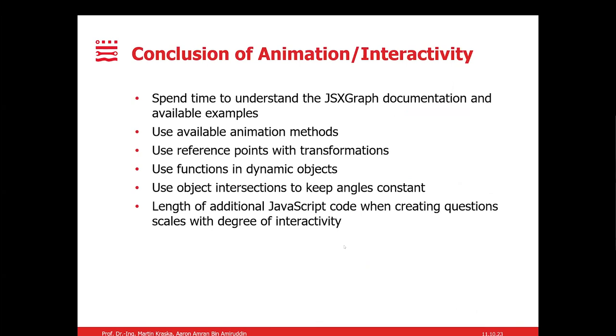And now moving on to the conclusion of the lessons that I've learned from trying to animate and make the objects interactive in MecLib. The first step is definitely to spend some time to understand the JSXGraph documentation and the available examples. And definitely we should also use the available animation methods. Also, when it comes to transformation, having reference points is crucial. When we want to make the object dynamic, we have to make use of functions. In the case of maintaining the angles, we have to use object intersections and assign the point to that new coordinate.